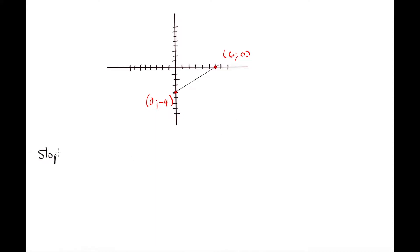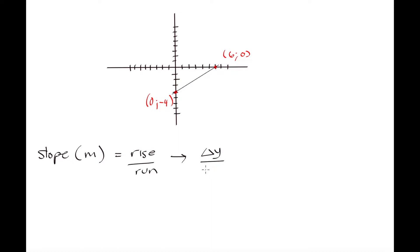So our slope, which we denote as m — that is going to be the general symbol for slope — is going to be equal to rise over run. And what that means is that we're going to be looking at the change in y over the change in x. The change in y is just going to be equal to y2 minus y1, and the change in x is just going to be x2 minus x1.